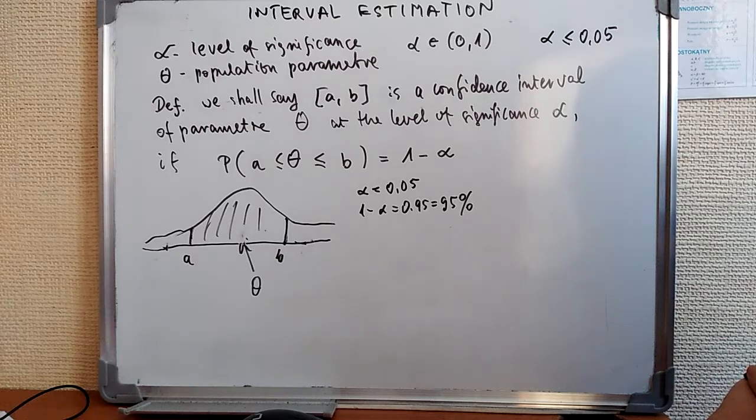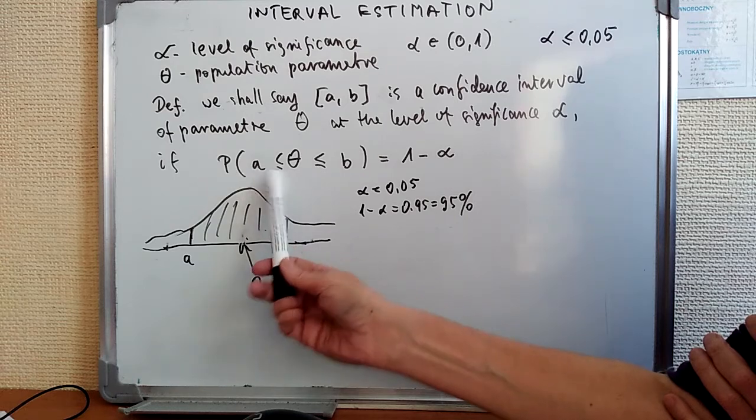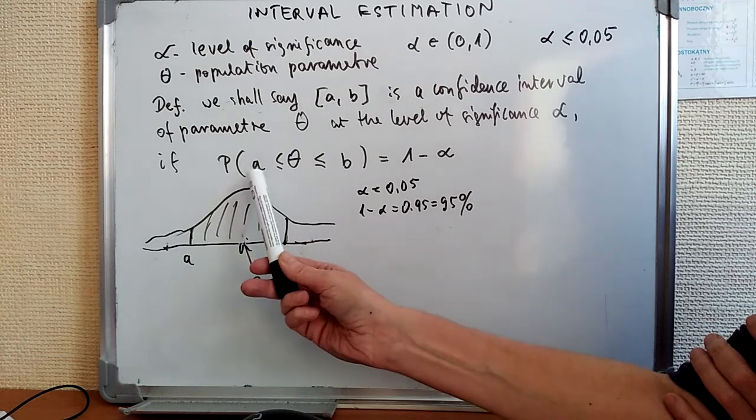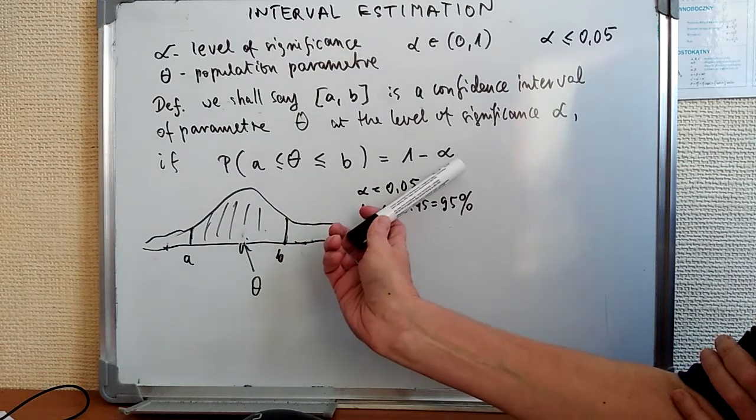Let theta denote the population parameter. And the definition says, we shall say that a and b is a confidence interval of parameter theta at the level of significance alpha if probability that theta is between a and b, it means somewhere in this interval, is equal 1 minus alpha.